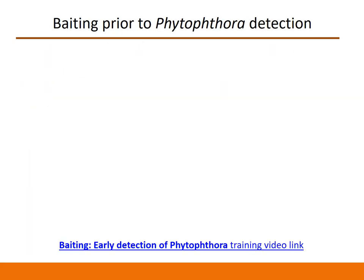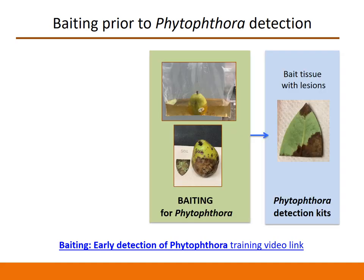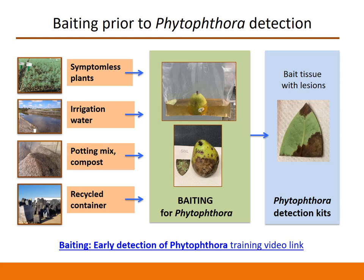The answer is baiting. We recommend growers to do baiting before using Phytophthora detection kits. You can bait with either fungicide-free pears or rhododendron leaves, and then use Phytophthora detection kits on the bait tissue showing lesions. For more information, check out our training video on baiting for early detection of Phytophthora. Using this approach, one can easily test irrigation water, potting mix, compost, and recycled containers associated with plant production for the presence of Phytophthora.